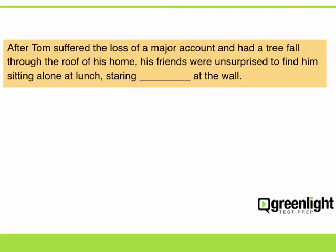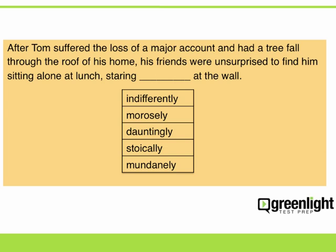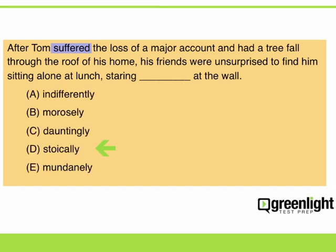Here's an example of an easy one-blank text completion question. As you can see, for text completion questions with one blank, there are five answers to choose from. Now several of these answer choices may seem like a possible fit. Only one — morosely — is the most appropriate based on the word 'suffered.' While it's possible that Tom was sitting stoically at the table, this word is not supported by any words in the sentence.